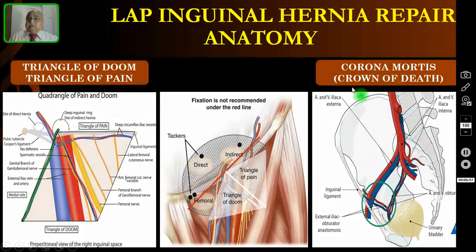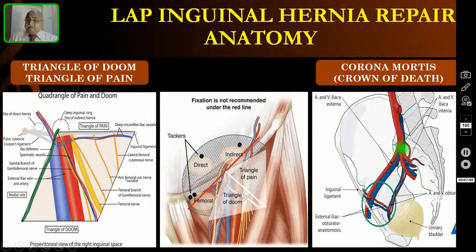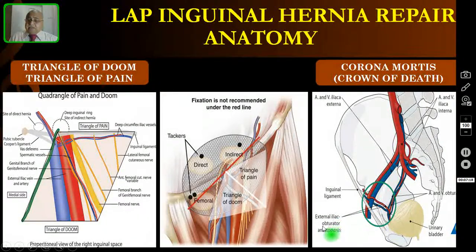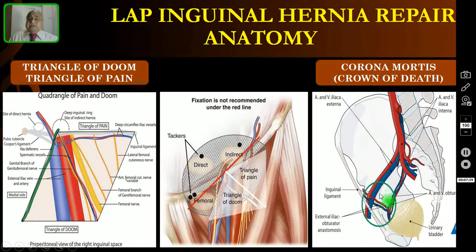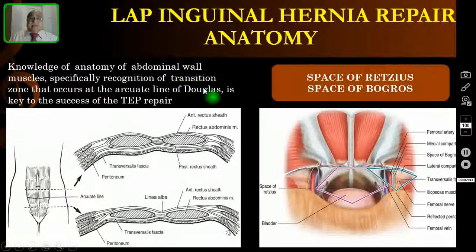Another important anatomical consideration is the corona mortis. This is an abnormal or accessory obturator artery that anastomoses with the external iliac artery and vein and the obturator vessels. If during dissection you injure this accessory or abnormal obturator artery or vein, it will bleed profusely. That is why it is called corona mortis, or the crown of death. This is an important anatomical factor you must know.